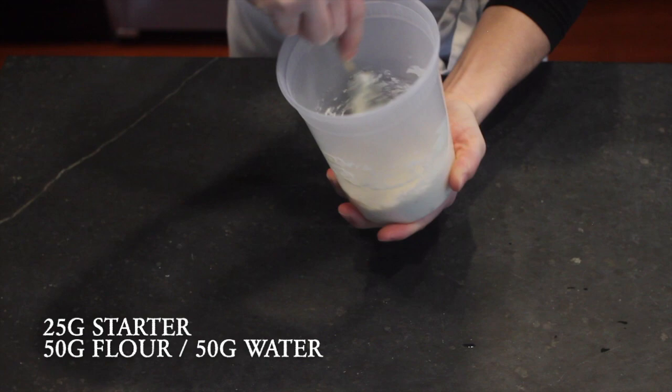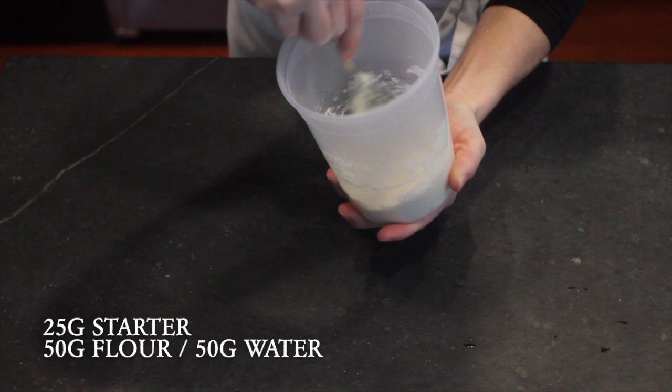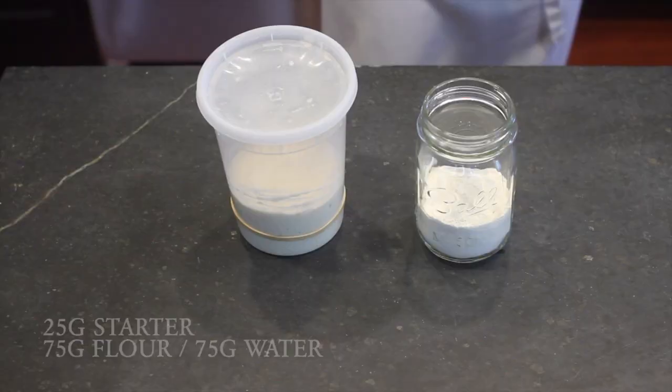She's currently on a twice a day feeding schedule and I feed her a 1-2-2 ratio. One part starter, two parts flour, two parts water. When the weather gets warmer, I'll probably up her to a 1-3-3 schedule or else she'll rise to her peak too quickly.